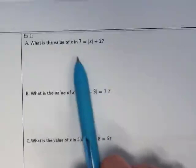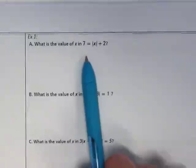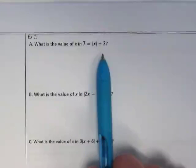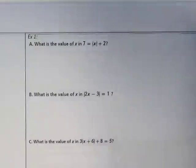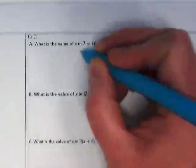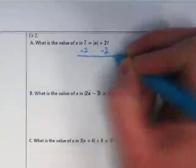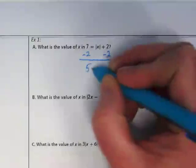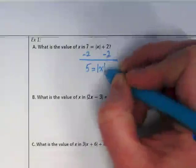So let's take a look at what that means with this absolute value equation. The 2 is with the absolute value, so we need to subtract it. And we end up with 5 is equal to the absolute value of x.